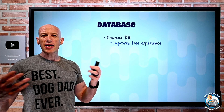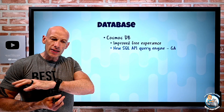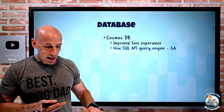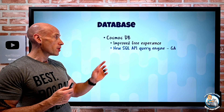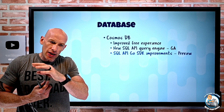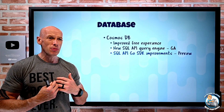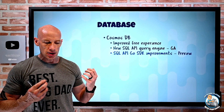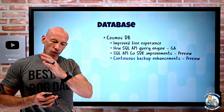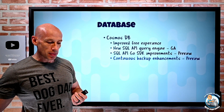On the database side, Cosmos DB has a free 30-day no-credit-card trial sandbox. There's a new SQL API query engine with improved performance for group by, distinct, offset limits, and operations over joins, using new types of indexes in more scenarios. The SQL API Go SDK now supports Azure AD authentication for fine-grained role-based access control instead of primary keys, scoped queries to a particular partition, and transactional batches. Continuous backup enhancements are available for the SQL API, MongoDB API, Gremlin API, and Table APIs, covering the free 7-day and paid 30-day continuous restore capabilities.